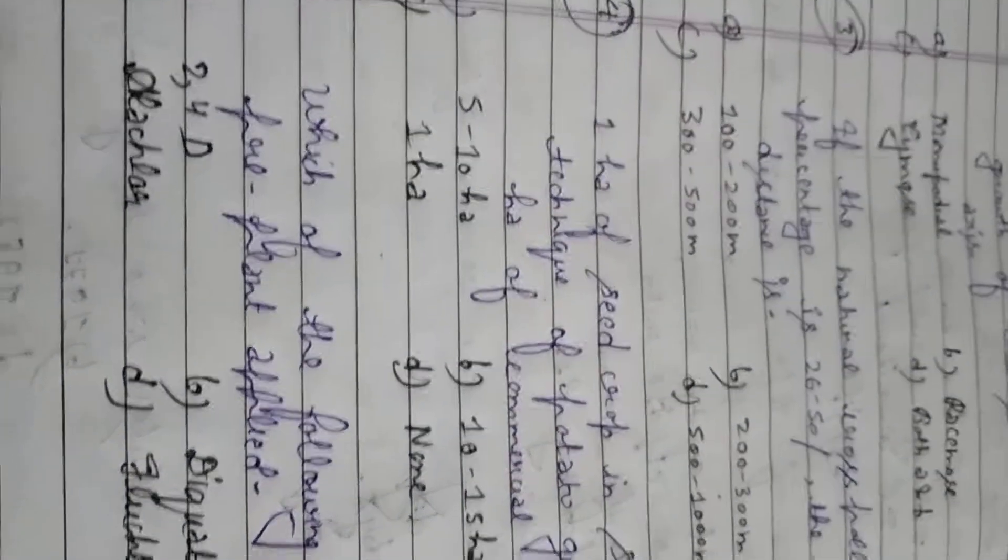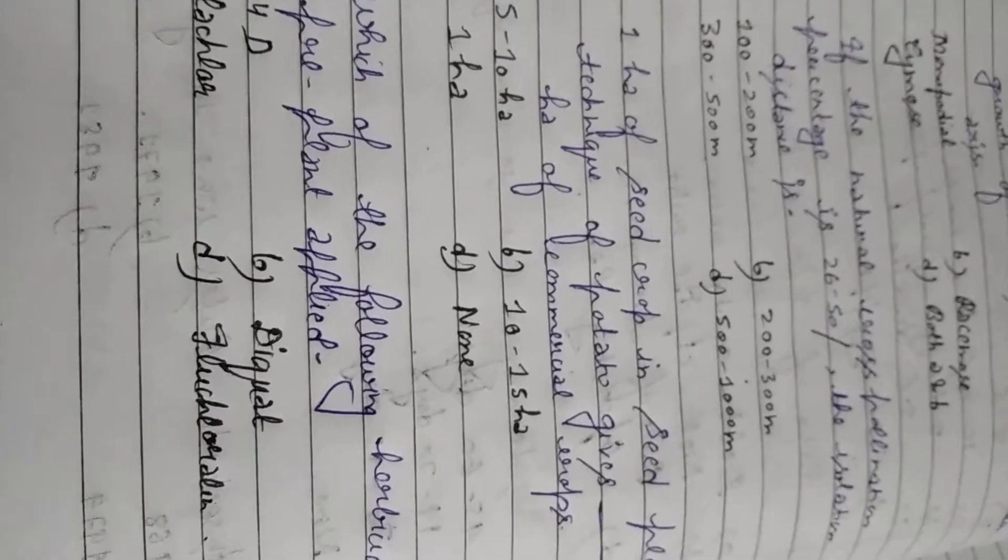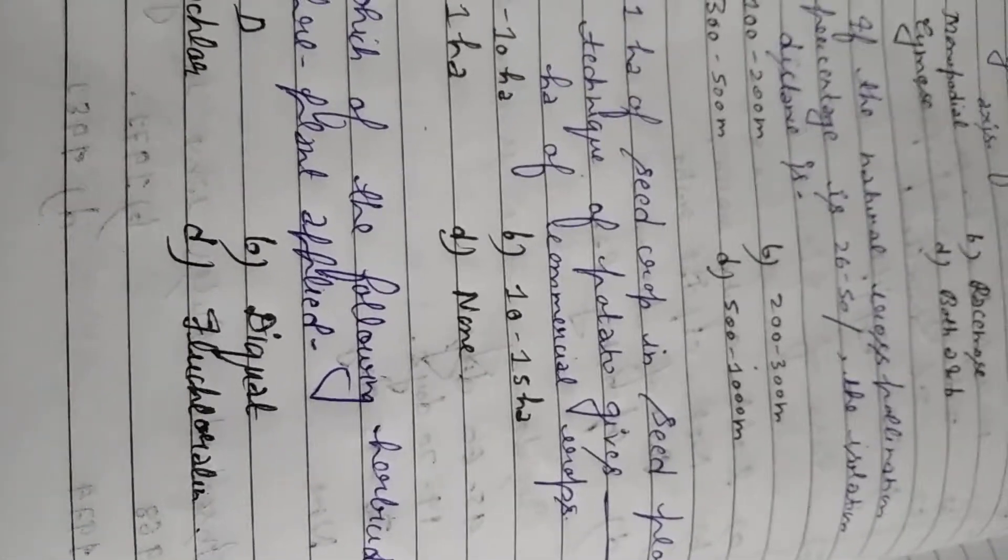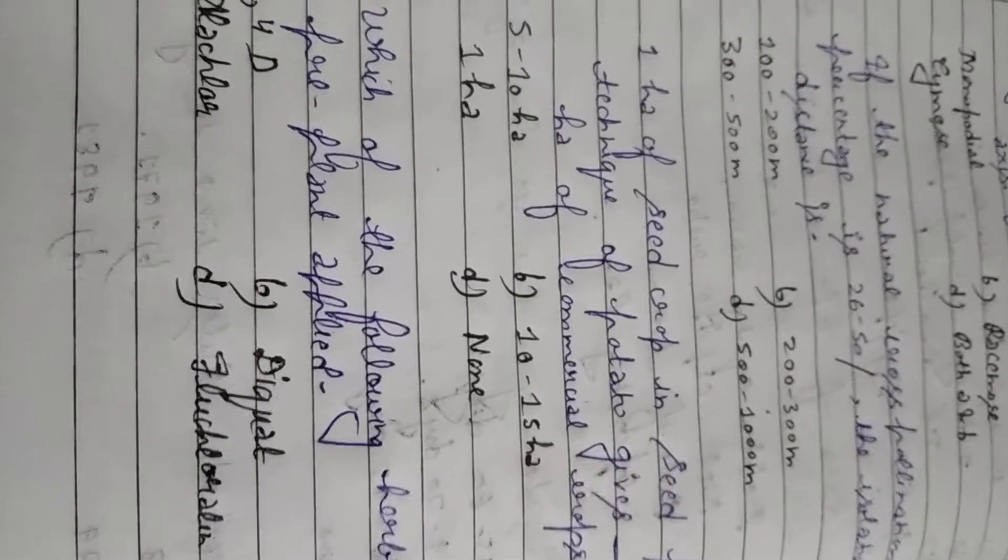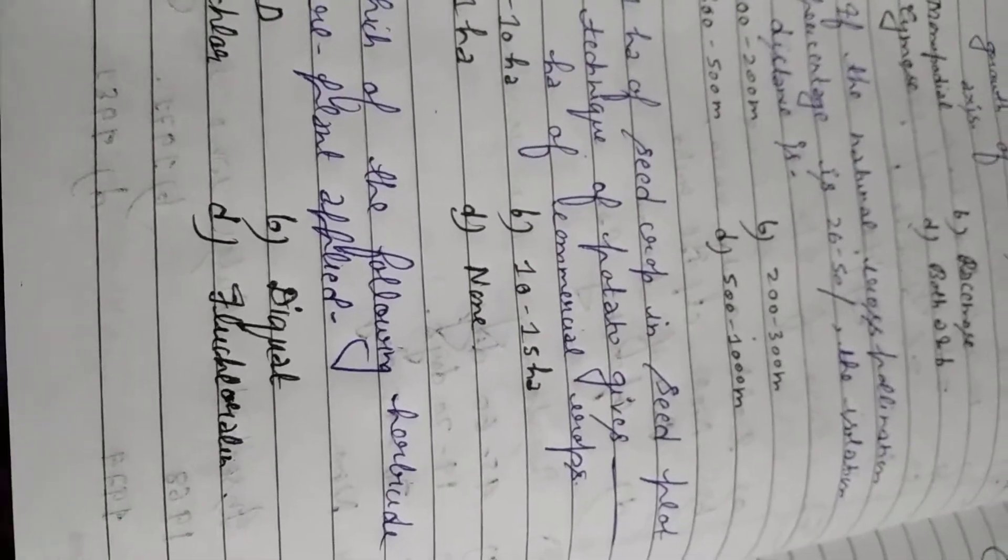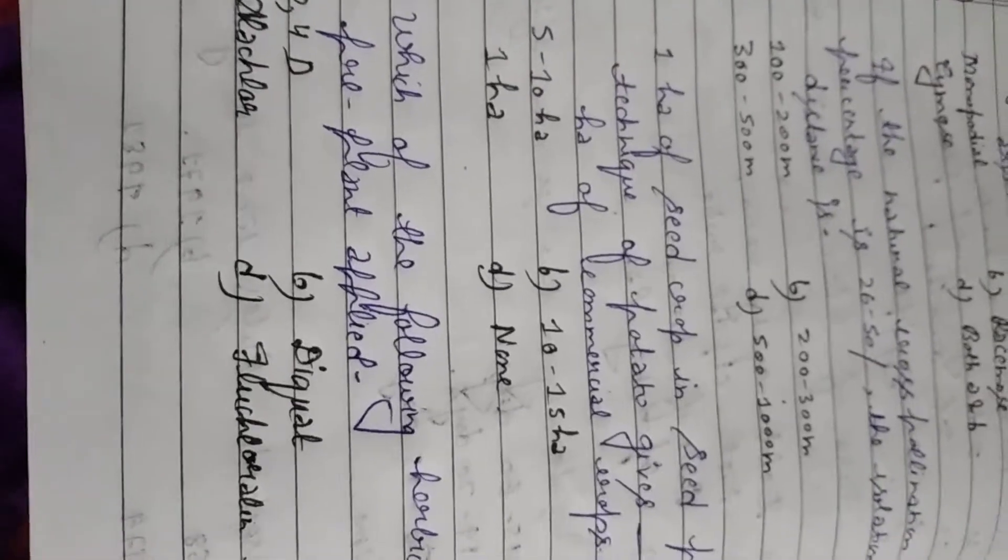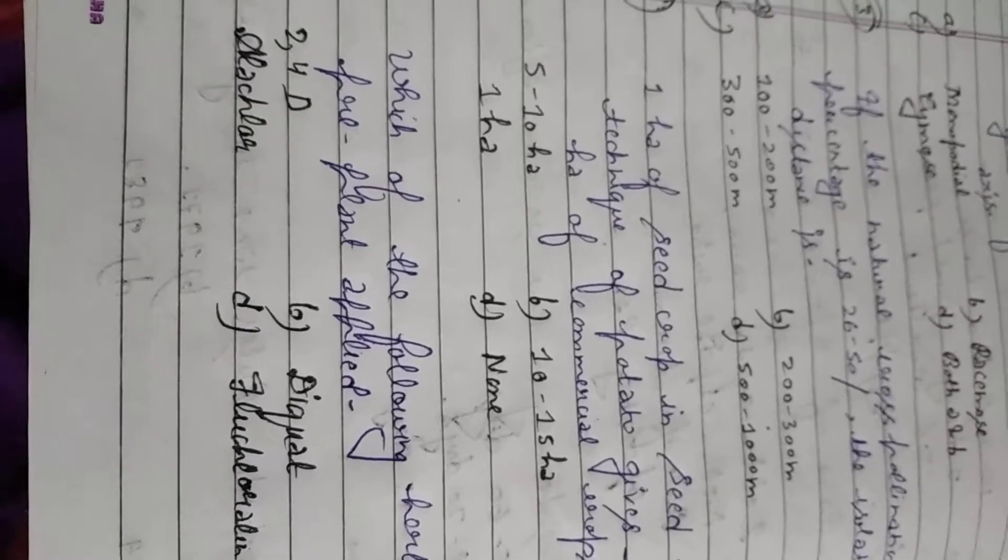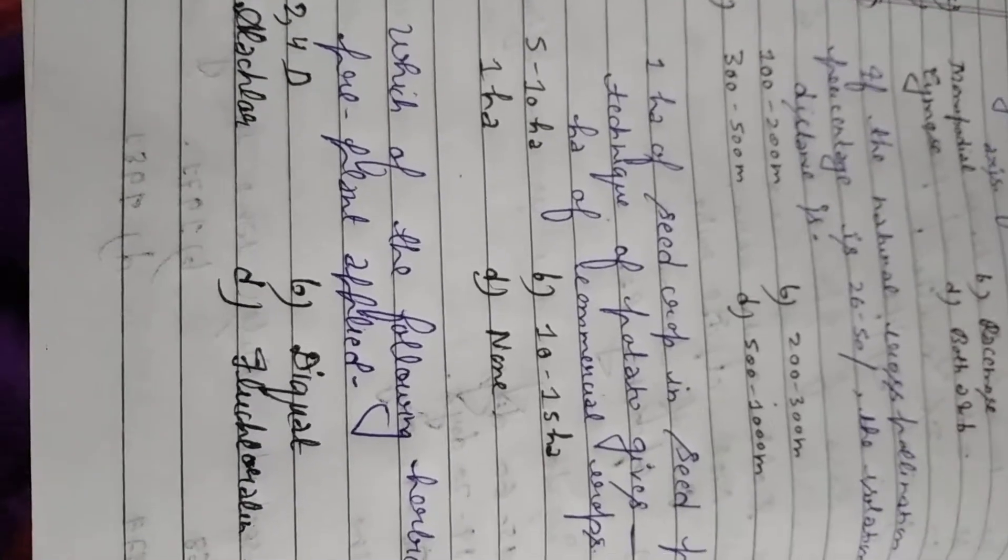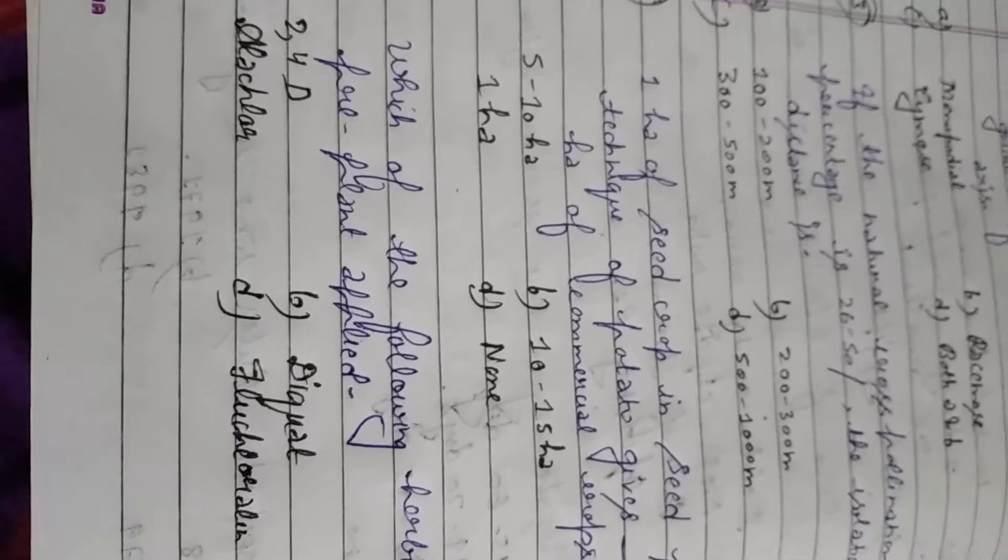Student question number 4. One hectare of seed crop in seed plot technique of potato gives how many hectares of commercial crop. Student seed plot technique, I told you many times it is found in potato. Important is name of the person. There are two techniques which are very confusing in potato which is TPS true potato seed and second is seed plot technique. Seed plot technique was given by Pushkarnath and true potato seed was given by Ramanujan. Please student remember it. Do not get it wrong. So exact answer you remember it. Option number B, 10 to 15 hectare is correct answer of this question. If you are growing 1 hectare of seed crop by seed plot technique in potato, you will get 10 to 15 hectare of commercial crop.